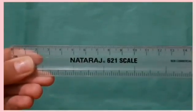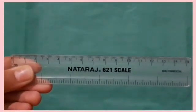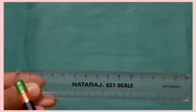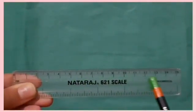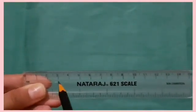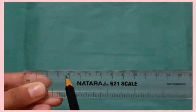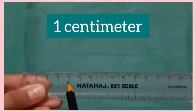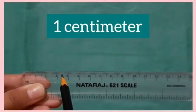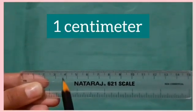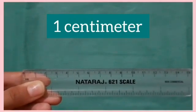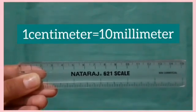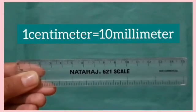Students, I am having this scale. We use the scale to measure the length of small things. There are 15 big marks on this scale. The distance between 2 big marks is 1 centimeter. There are 10 small marks between 2 big marks. These marks represent millimeters. So, 1 centimeter is equal to 10 millimeters.